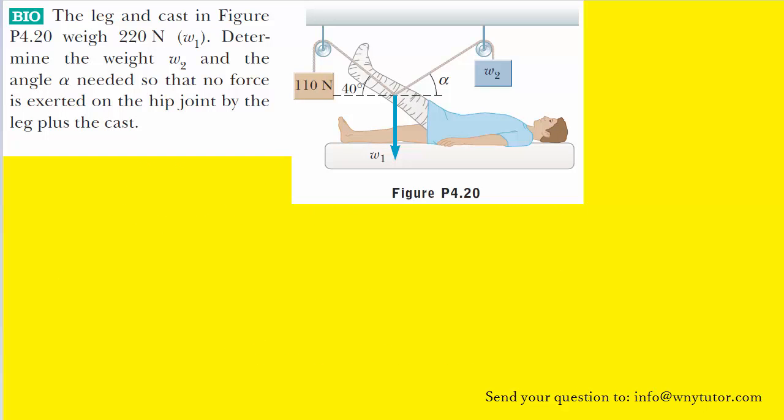As always, pause the video and give the question some thought before moving on. In order to determine the weight and the angle needed so that no force is exerted on the hip joint by the leg and cast, we will need to first draw a free body diagram of the given picture.